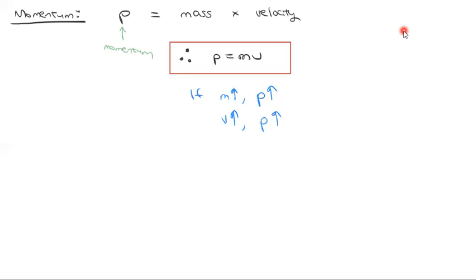Kinetic energy is half mv squared. As m goes up, kinetic energy goes up; as v goes up, kinetic energy goes up — but to the square. Kinetic energy and momentum are similar in that they both increase with m and v, but kinetic energy is the moving energy. Momentum is different. Kinetic energy has its uses when talking about conservation of energy, and momentum is useful because there are things that don't follow conservation of energy but do follow conservation of momentum.